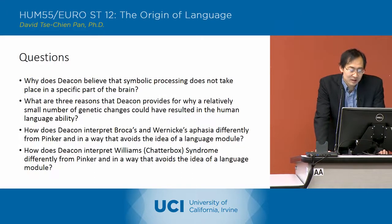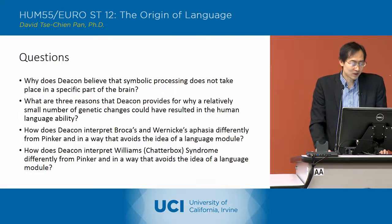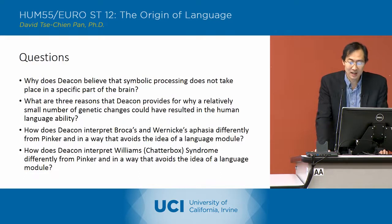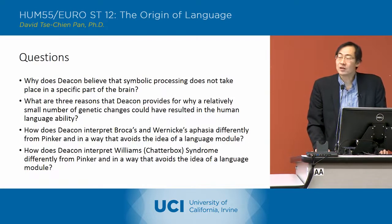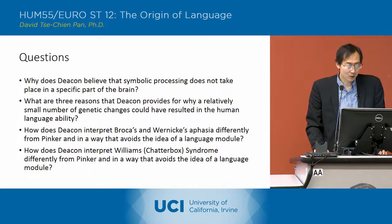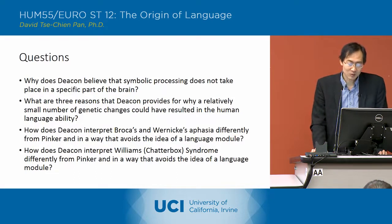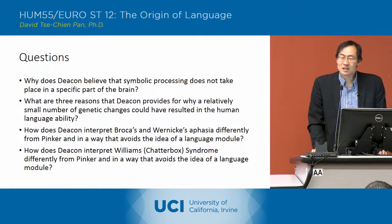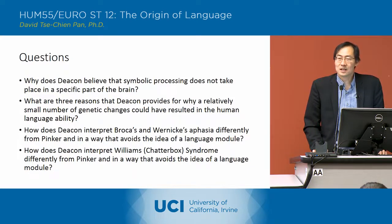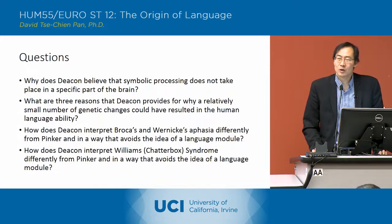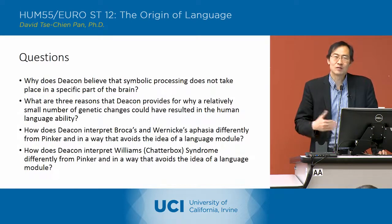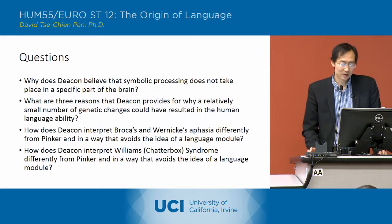How does Deacon interpret Broca's and Wernicke's aphasia differently from Pinker, in a way that avoids the idea of a language module? In contrast to Pinker, who sees Broca's and Wernicke's areas as language processing modules — specific places in the brain where language is processed — Deacon interprets those areas as basically switching points in the brain, network points where the brain needs to shuttle information back and forth; they are connecting points for the information that's transferred.